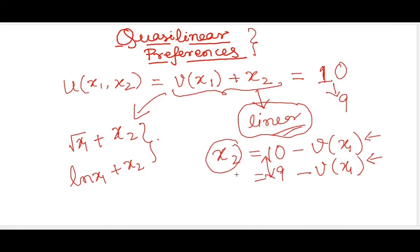So x2 will just have a gap which is represented by this 10 and 9, which means 10 minus 9 is 1.